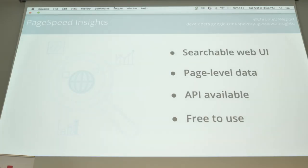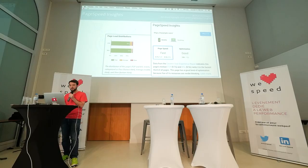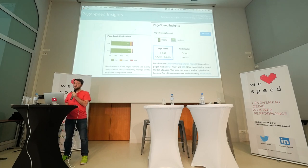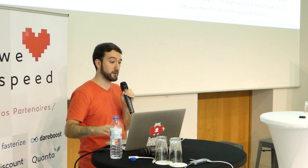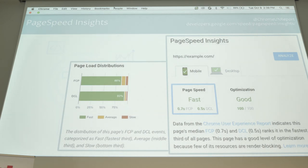Let's move on to PageSpeed Insights. As I mentioned, it analyzes a page and gives you optimization suggestions. We've recently also added CRUX data here so you can see how fast users experience that page. It's available as both a web interface and also an API, which is free to use. To use it, all you do is search for a web page. In this case, example.com is the homepage of this website — not the entire origin as in the BigQuery dataset. It has a fast designation here where FCP is 0.7 seconds — I believe that's the median.